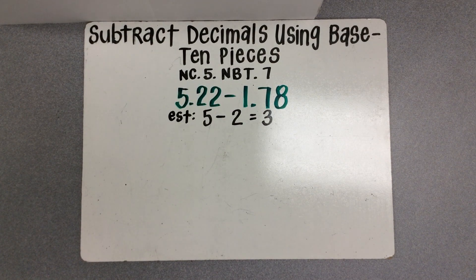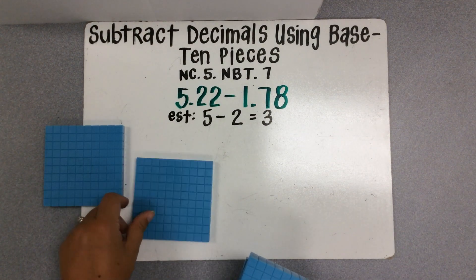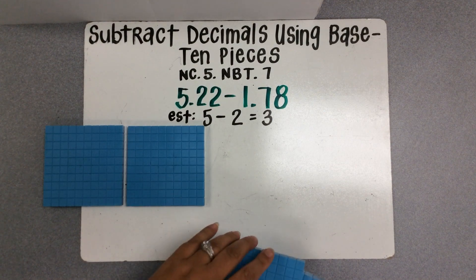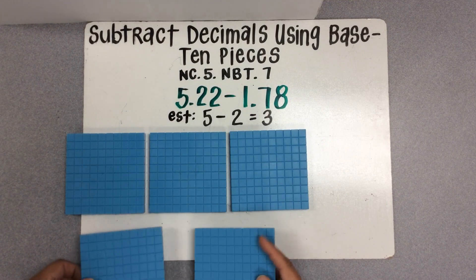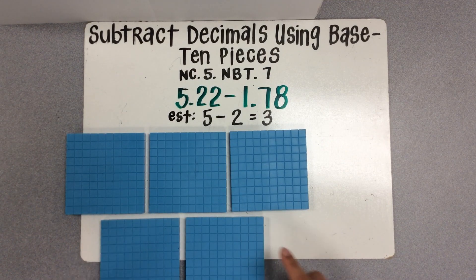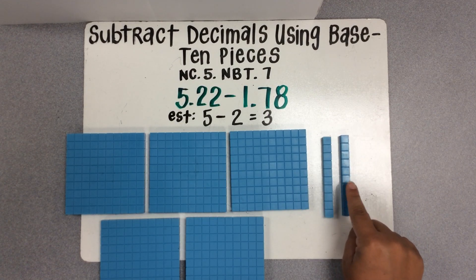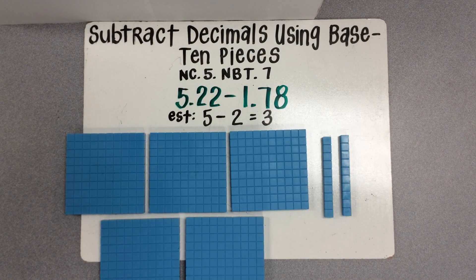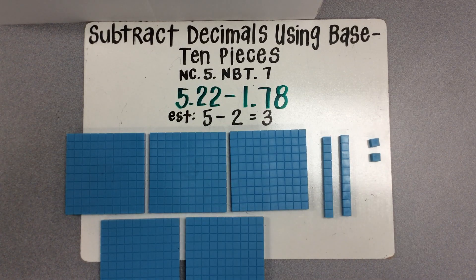To use base 10 pieces to subtract, we'll begin first by modeling the amount that we will subtract from. So I'm going to show 5 and 22 hundredths. Remember that each flat represents 1 whole when we are using base 10 blocks to represent decimal numbers. So we have 5 wholes. Now 22 hundredths — we have 2 tenths. Remember a rod represents 1 tenth. And we have 2 hundredths. Each unit represents 1 hundredth. So there we have 5 and 22 hundredths.